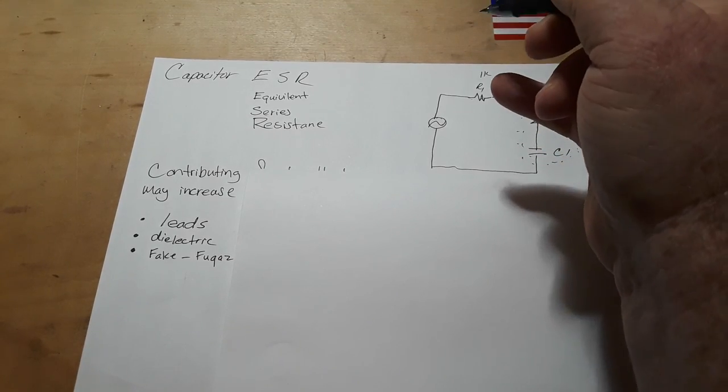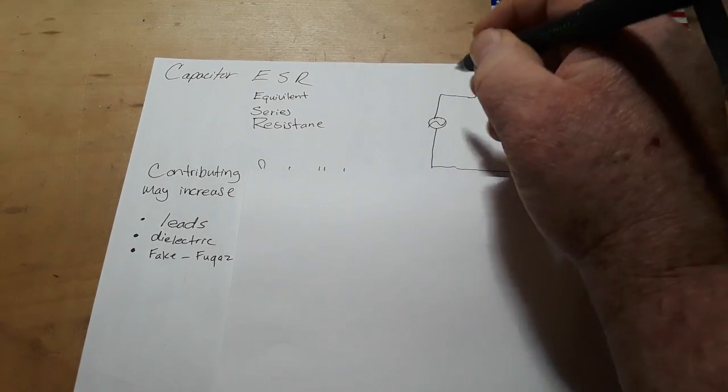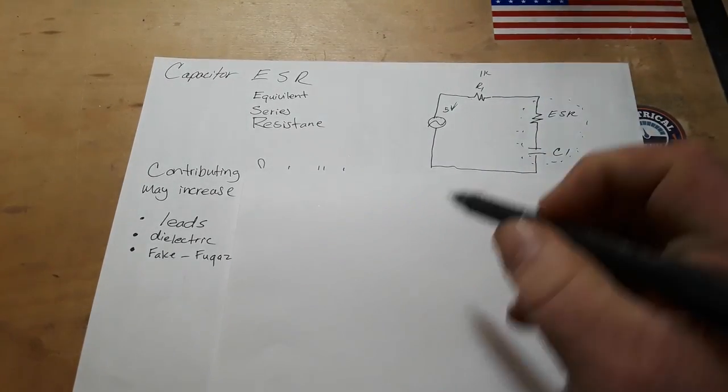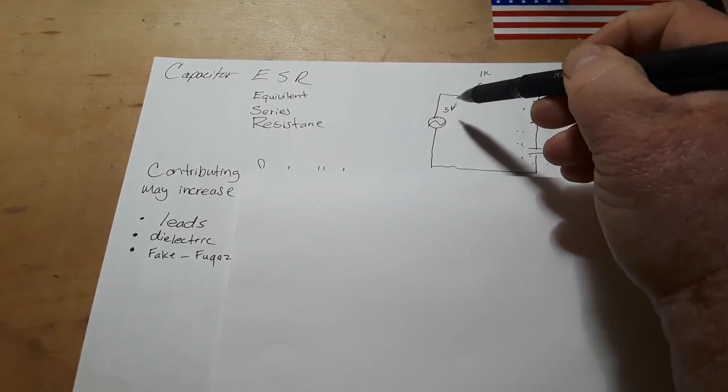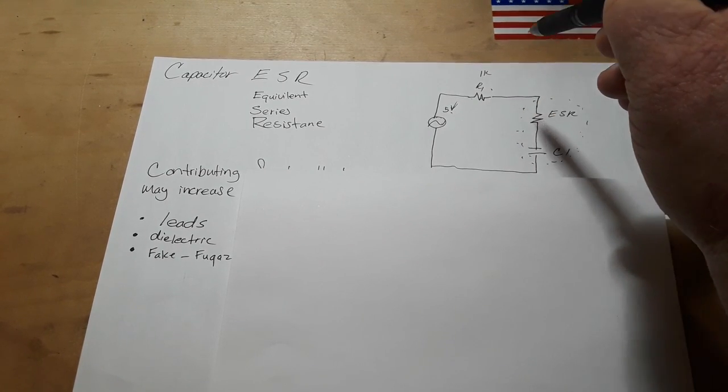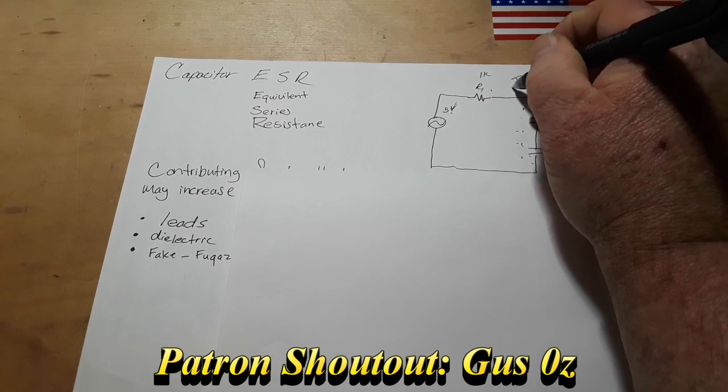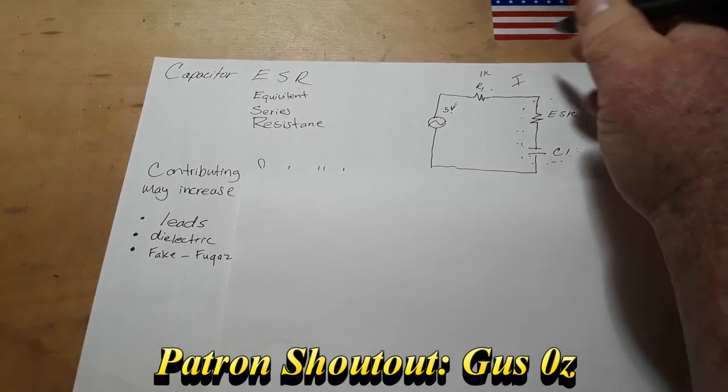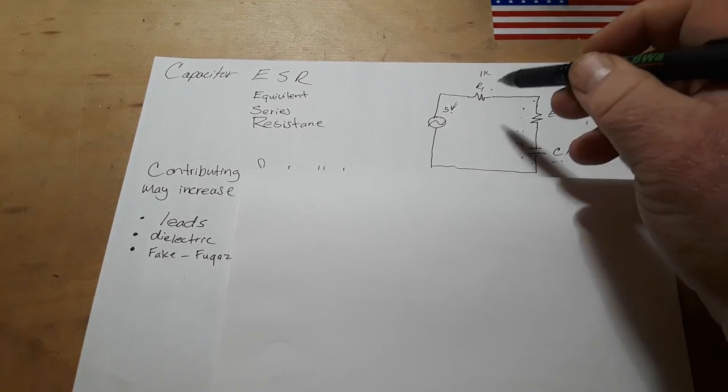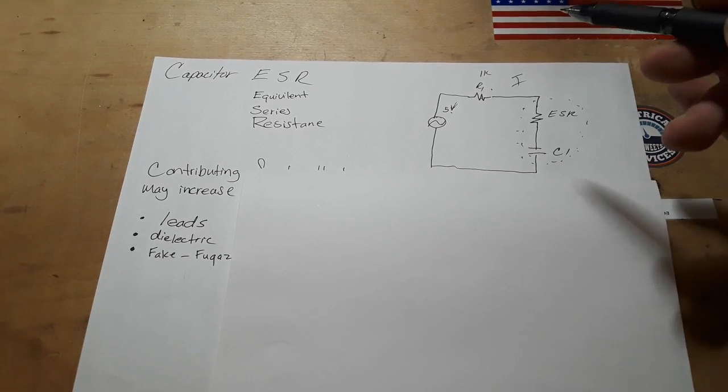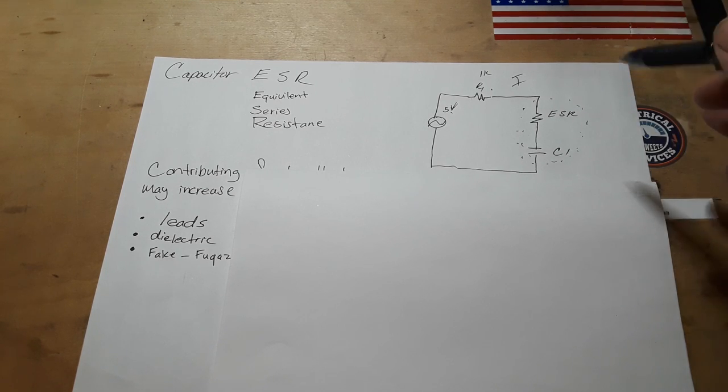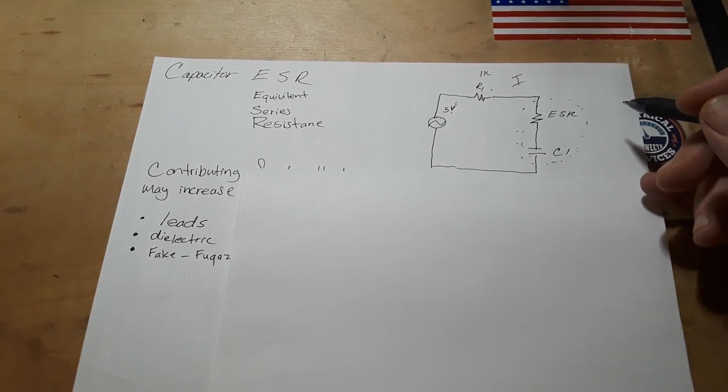Let's say we have 5 volts and let's say it's a 1k resistor. We have E, we have R. Now we can find I. That gives us the current of our circuit. Knowing the current of our circuit, knowing the resistance, we can divide the voltage by the resistance of the capacitor and that will give us our ESR.